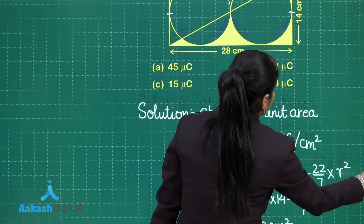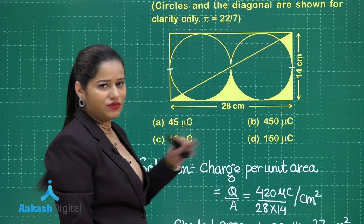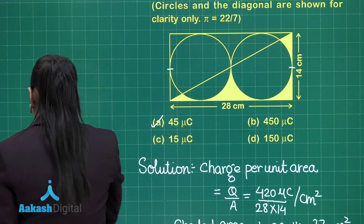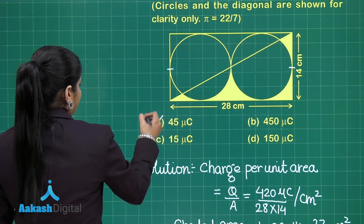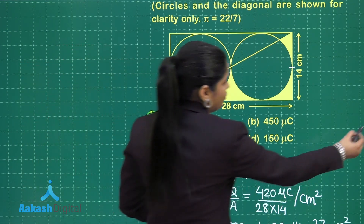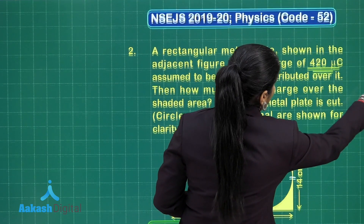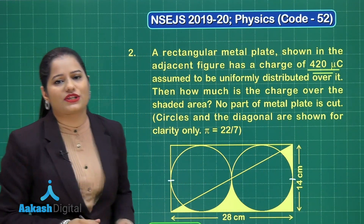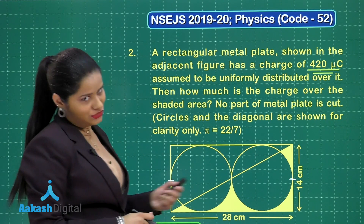Looking at the options, option A is the correct answer for this question — 45 microcoulombs. This question is now clear and we are done with the solution. Let us move on to question number 3.